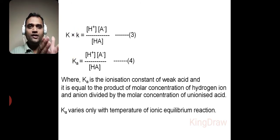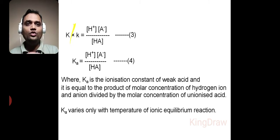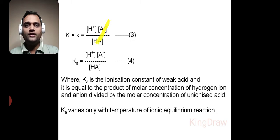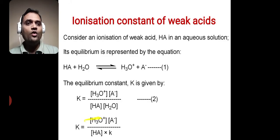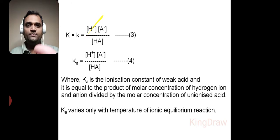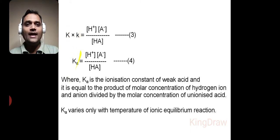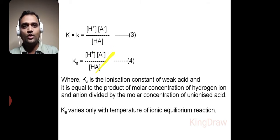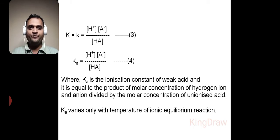We have shifted that small K from one side to the other. So K times K gives us Ka. We have also replaced H₃O⁺ with H⁺, because the molar concentration of hydronium ion is equal to the molar concentration of hydrogen ion. Finally, we have equation Ka, where Ka is equal to the molar concentration of H⁺ times the molar concentration of A⁻, divided by the molar concentration of HA. This is equation 4.